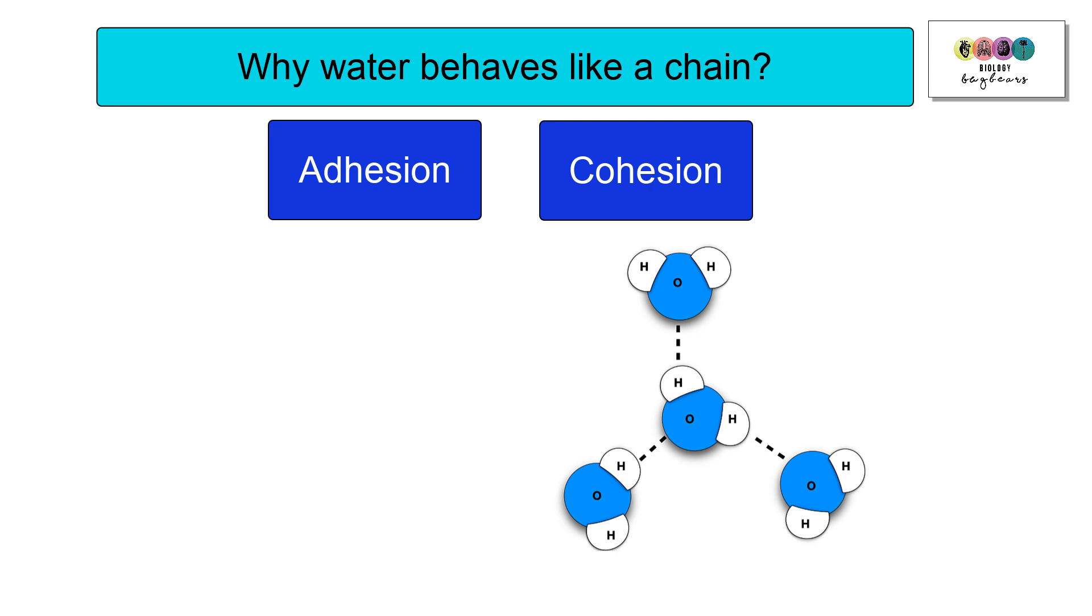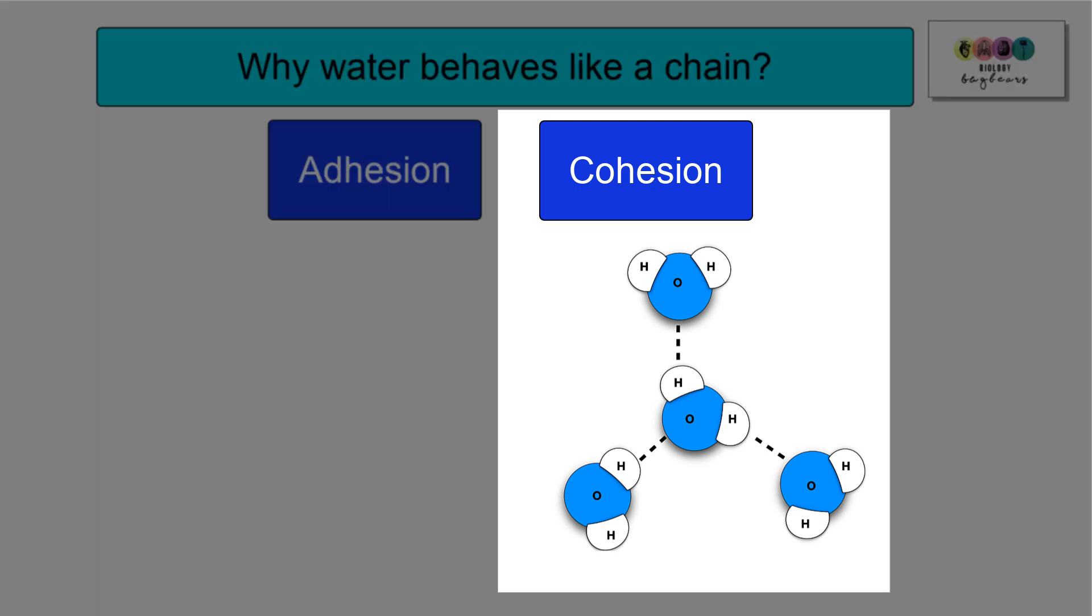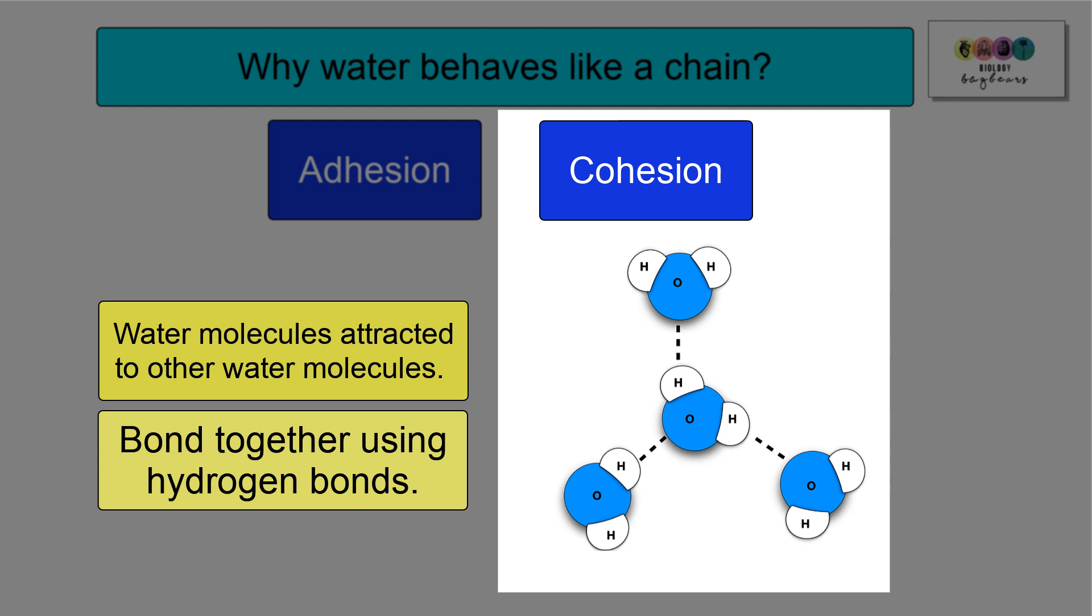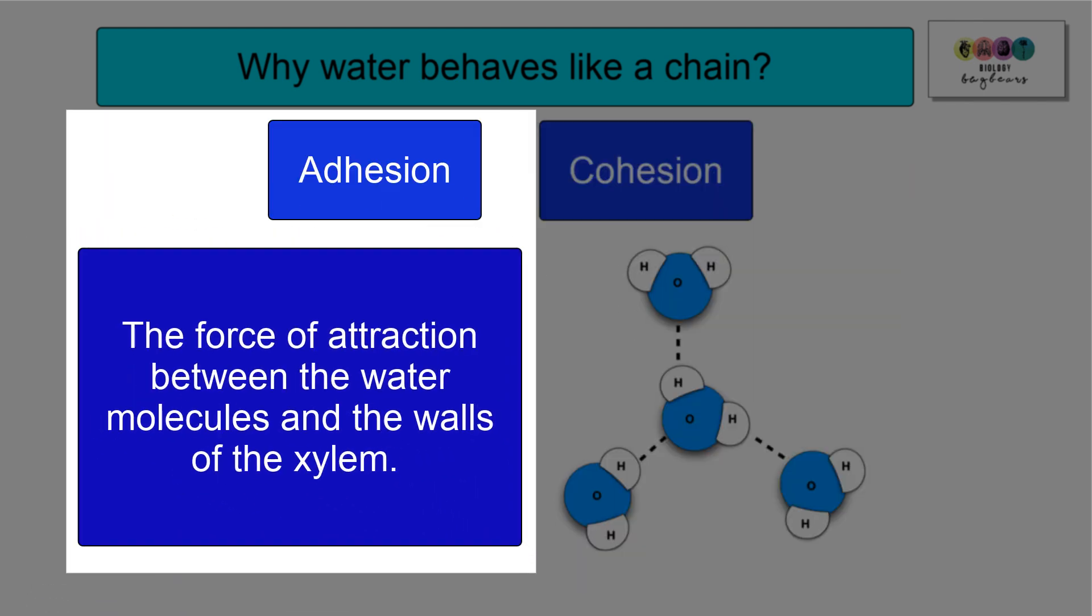Transpiration is pulling this great column of water or this chain of water upwards. It's all down to two properties: cohesion and adhesion. Cohesion is the strongest. This really means that water molecules are attracted to other water molecules. They have a great affinity for each other and they bond together using hydrogen bonds. Adhesion: there is a force of attraction between the water molecules and the walls of the xylem.